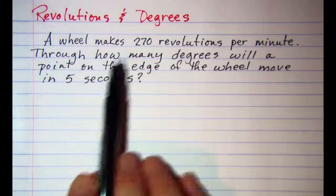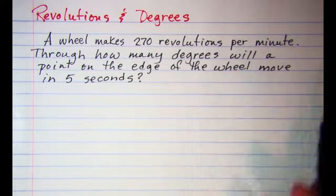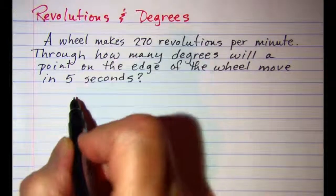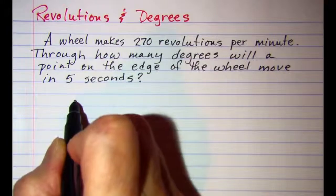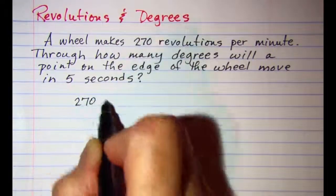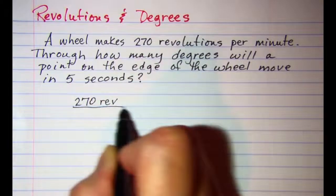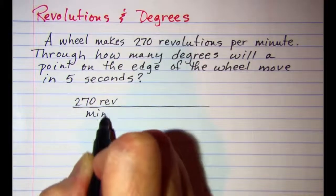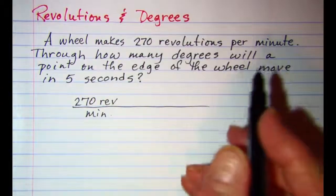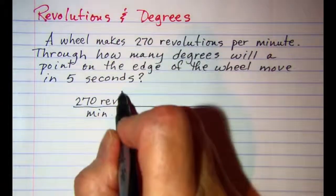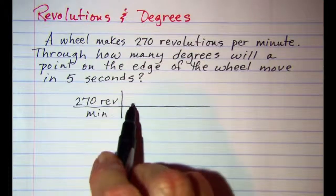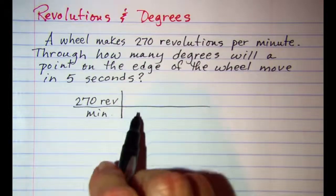So one way to deal with this problem is with unit multipliers. The wheel has a rate of 270 revolutions per minute. Now when you do unit multipliers, you multiply by fractions that are equal to 1.